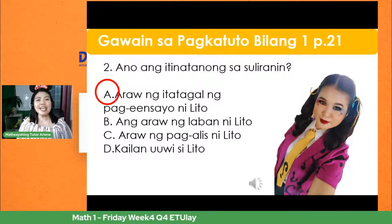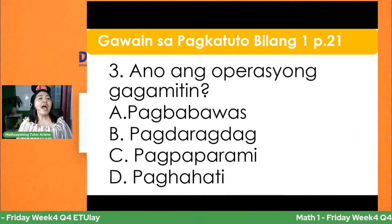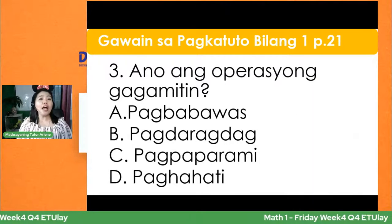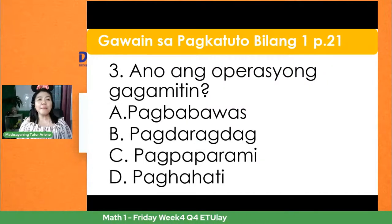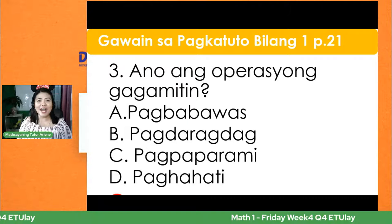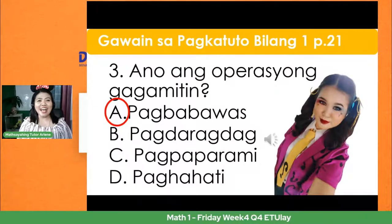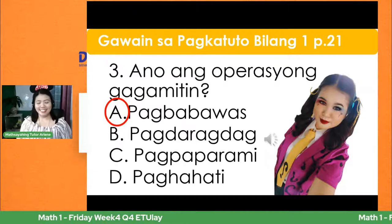Number 3 — ano ang operasyong gagamitin? A. Pagbabawas. B. Pagdaragdag. C. Pagpaparami. D. Paghahati. Ang tamang sagot ay letrang A — pagbabawas. Sino nakakuha ng tamang sagot? Tama si Mylene, si Dan, si Samantha, si Roslyn.